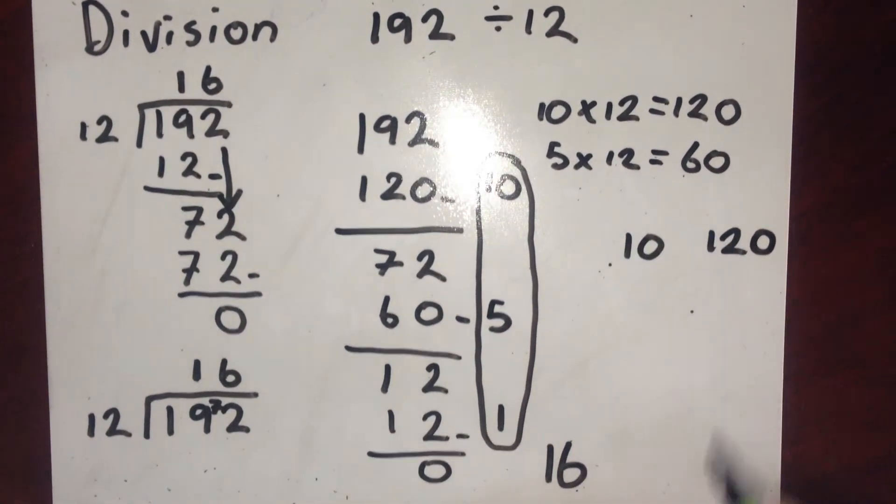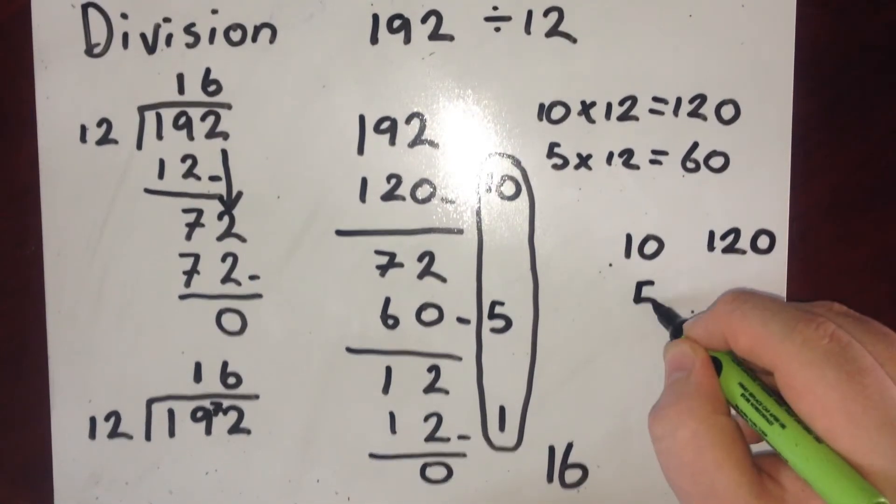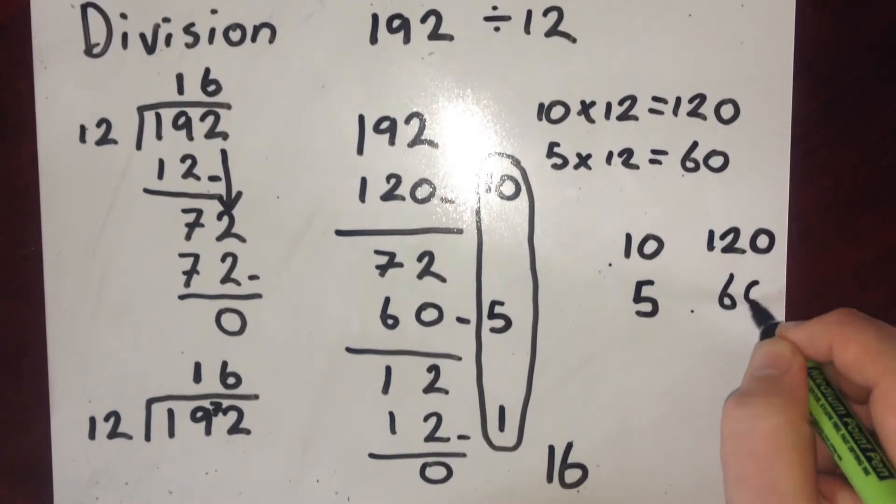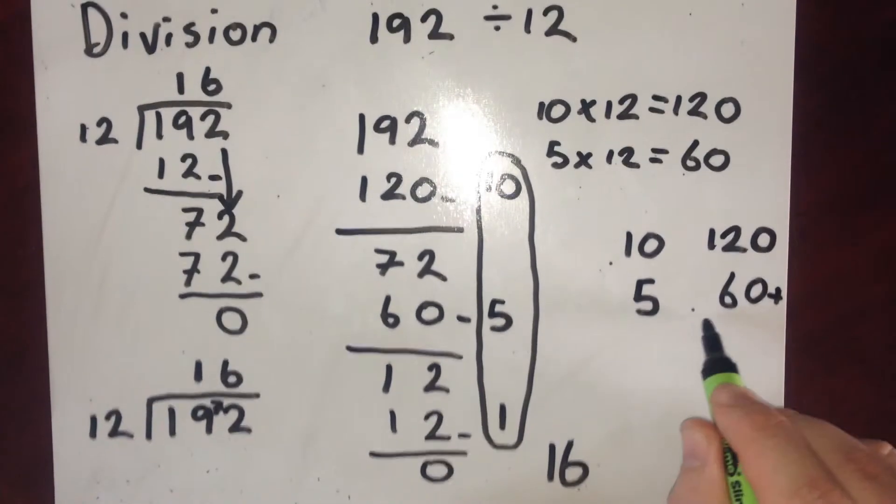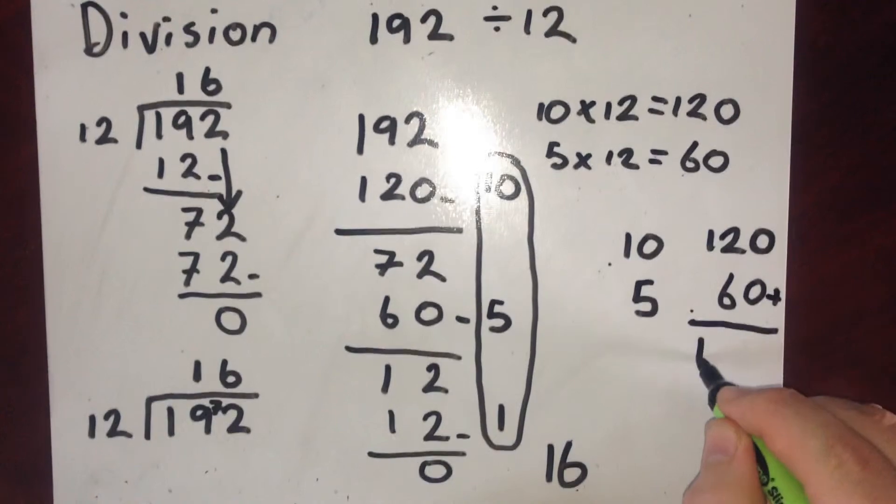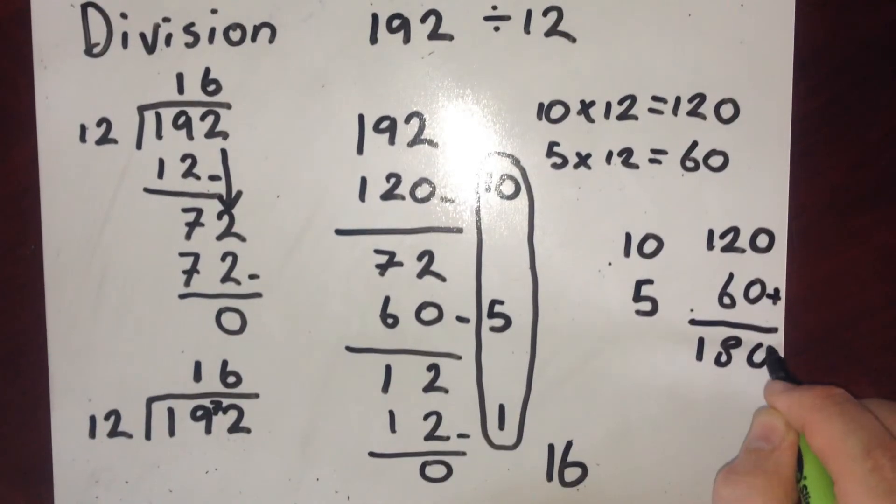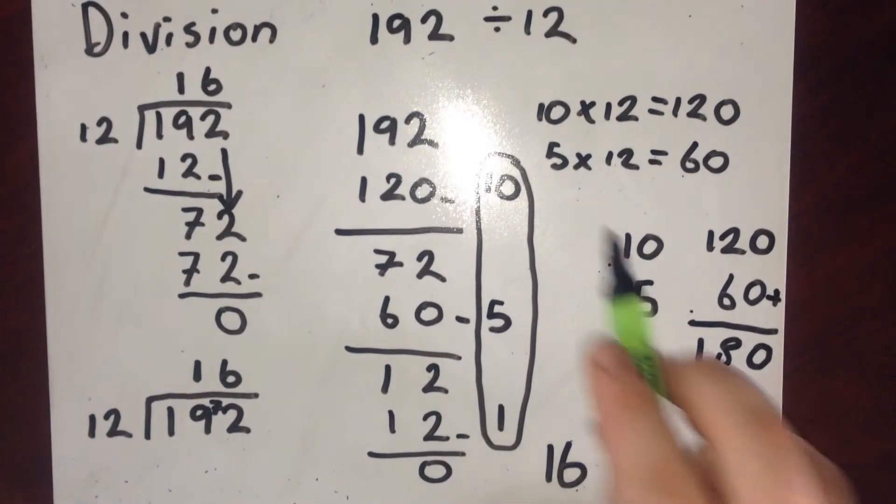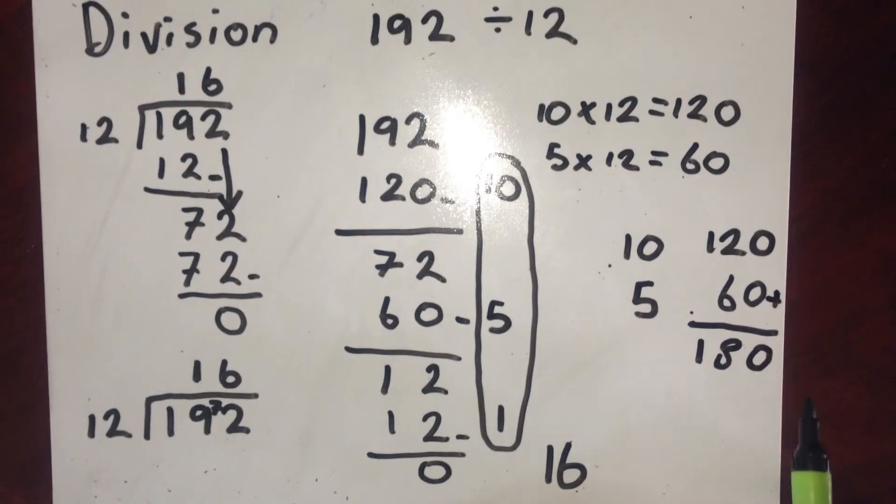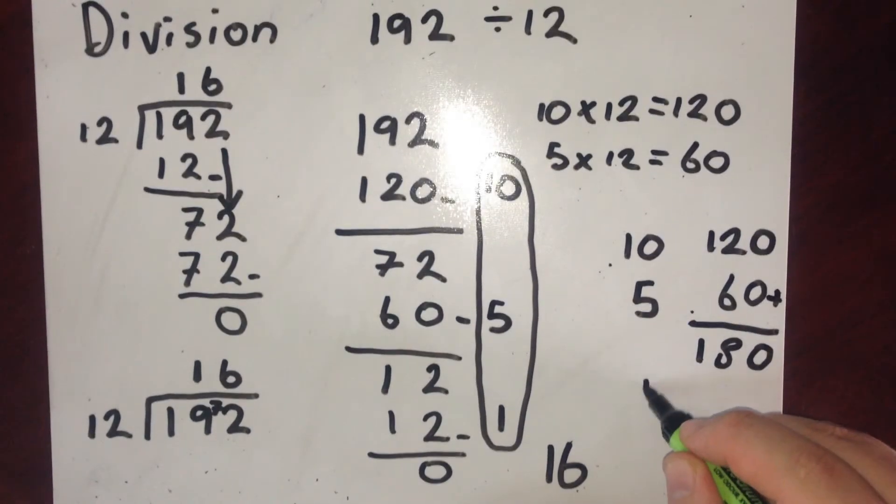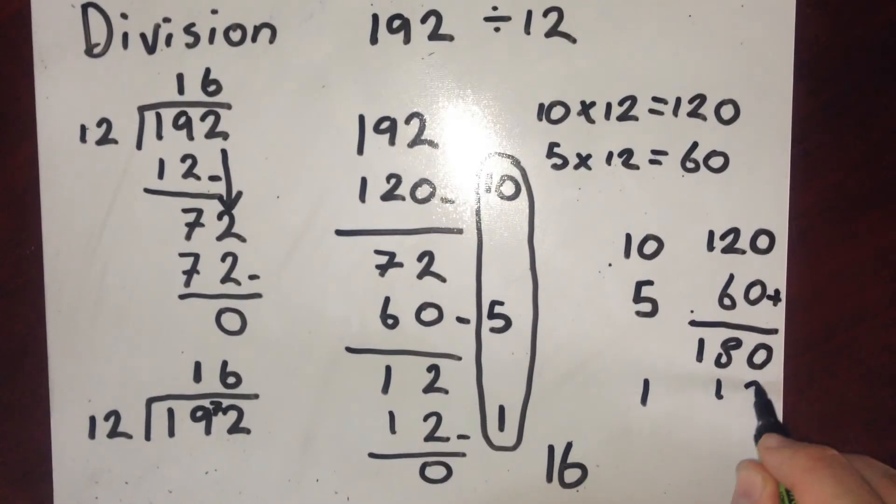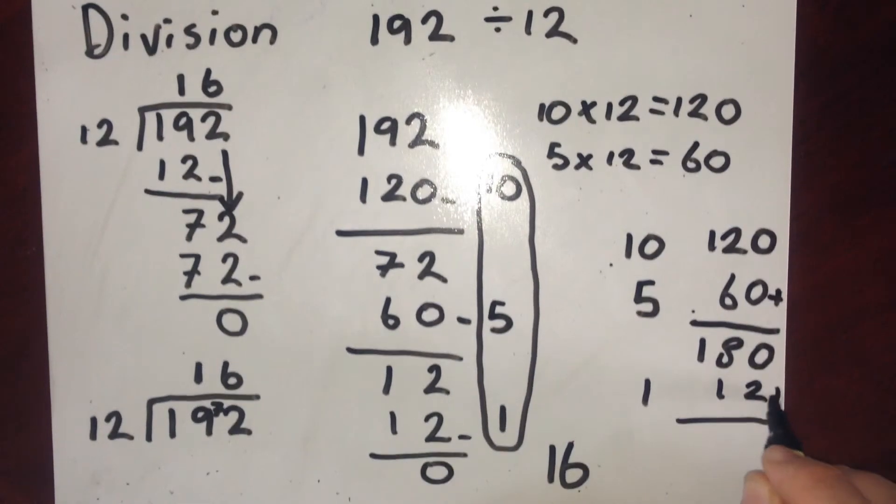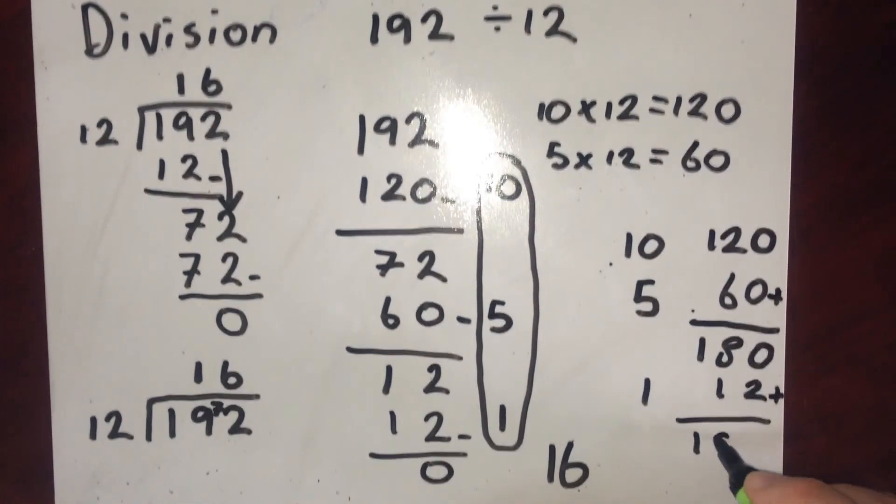Then 5 lots of 12 is 60. So I could put another 5 on and add them. So that's 180. I need to get to 192. I'm 12 away. So that's 1 lot of 12 I need to add on. That takes me to 192.